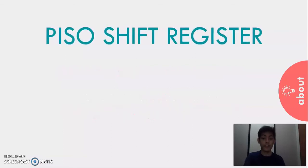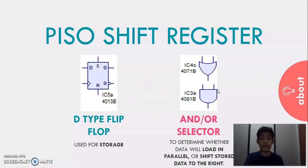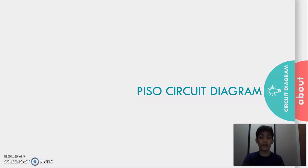For this type of shift register, a D-type flip-flop was used to store data, and OR selectors or gates were used as a multiplexer, which was used to determine whether the data will load in parallel or shift stored to the right.